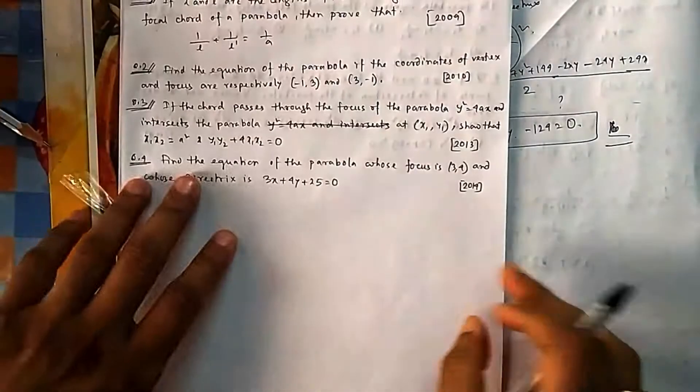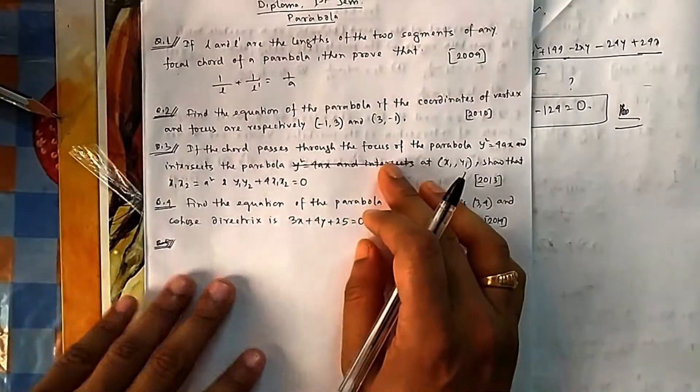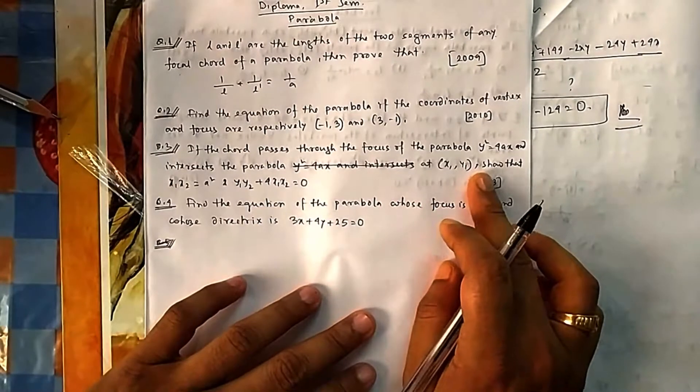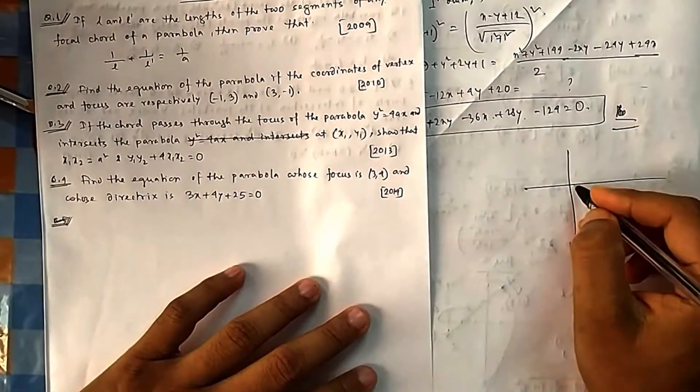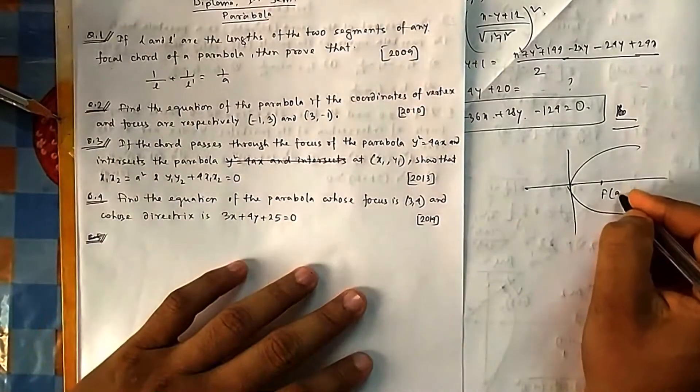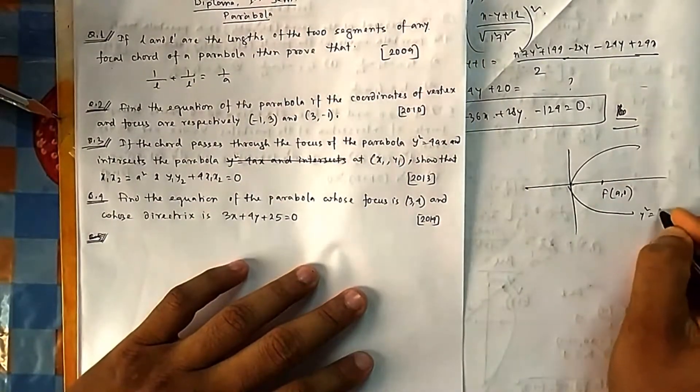Now if you come to question number three, the chord passes through the focus of the parabola and intersects the parabola at (x₁, y₁) and (x₂, y₂). So again, a chord passes through the focus of the parabola.